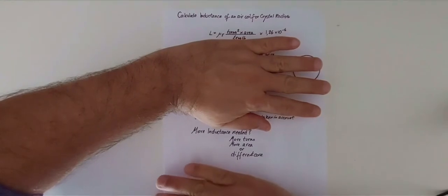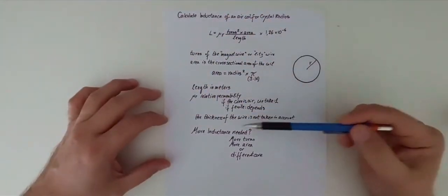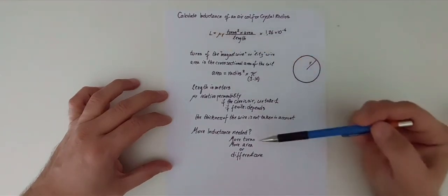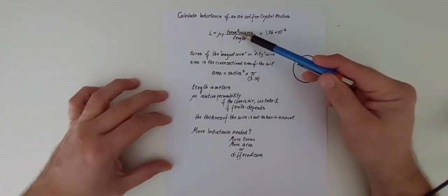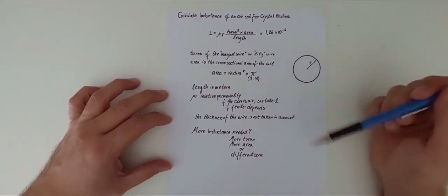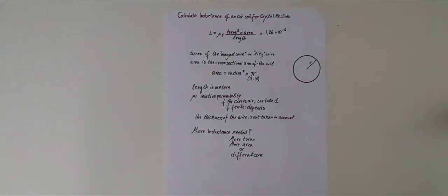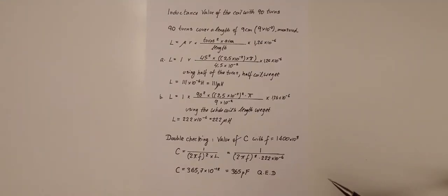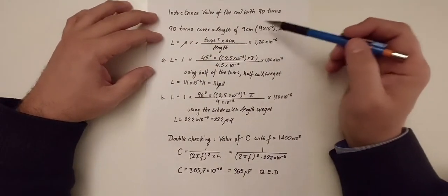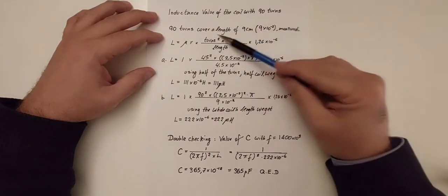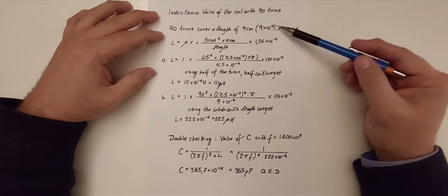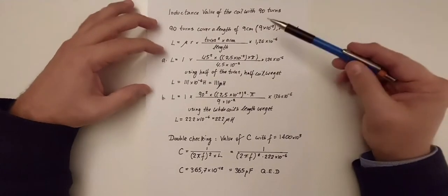Some considerations here. A side note: what derives from this, if more inductance is needed, a higher value of L is needed, then more turns are required, or more area, or a different core. I have all my tools. Now I'm ready to calculate the inductance value of my 90 turns of coil. 90 turns cover a length of 9 centimeters. I have to transform that in meters, 9 times 10 to the minus 2.